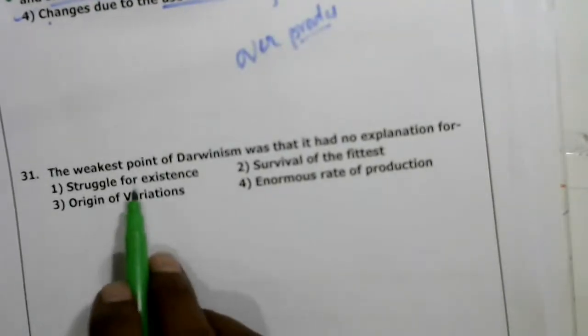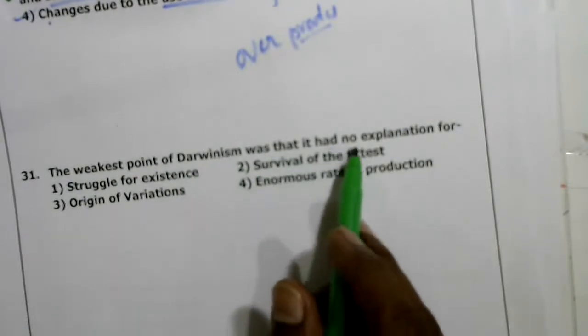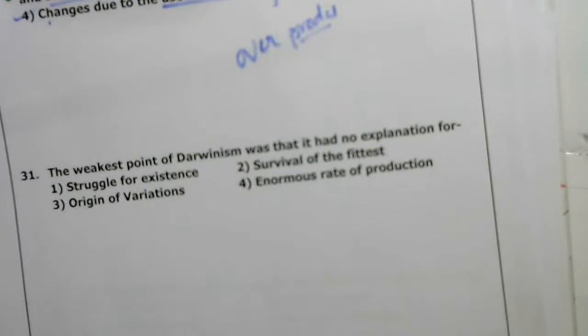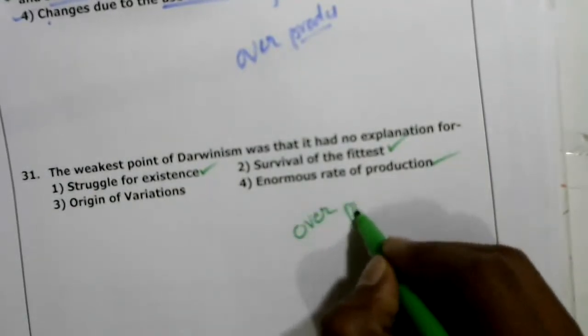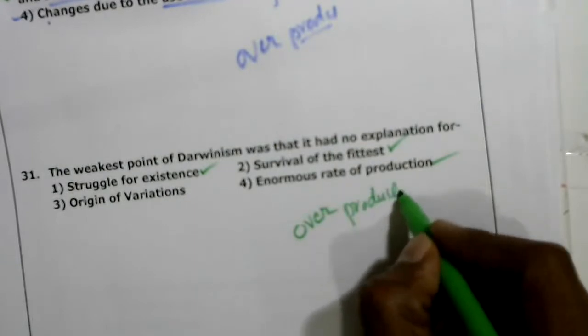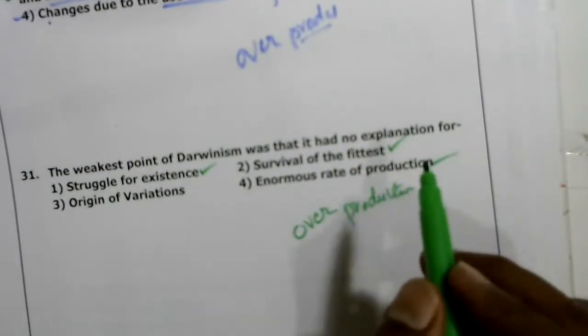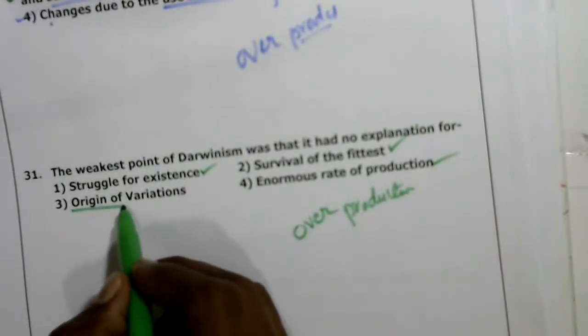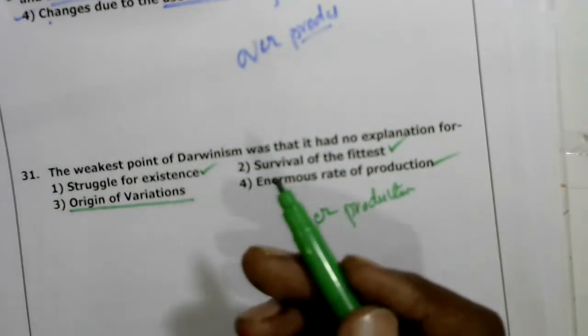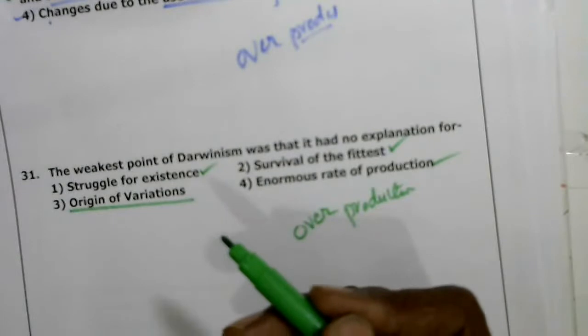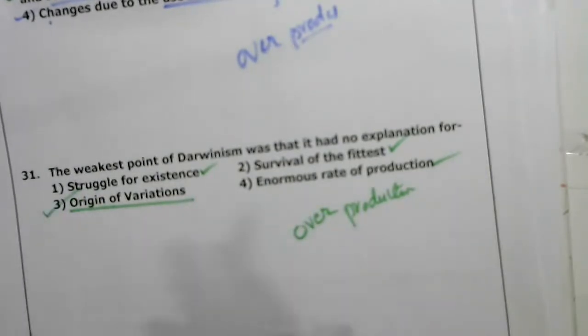Thirty-first question: the weakest point of Darwin was that he had no explanation for — Darwin explained struggle for existence, survival of the fittest, and enormous rate of reproduction (overproduction), but Darwin did not explain the origin of variation — how organisms change from one generation to another. That variation was not explained by Darwin. Third option is correct.